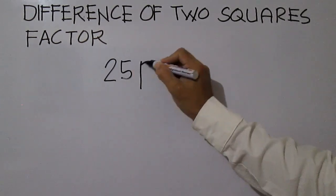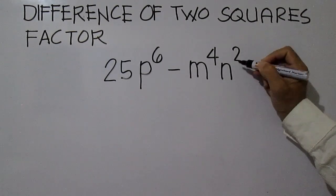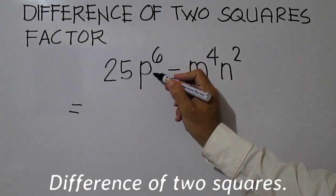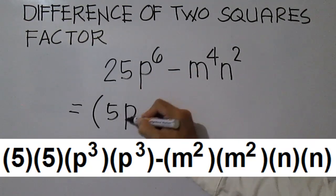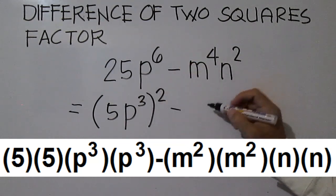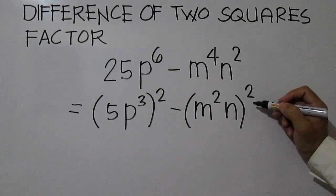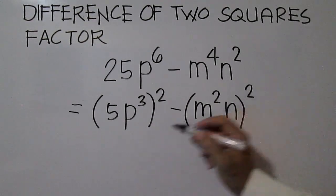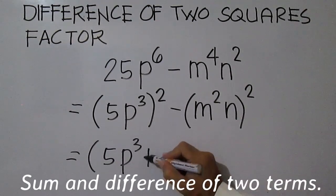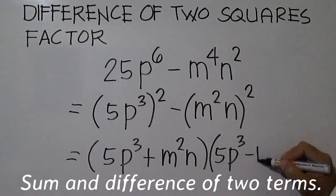Factor 25p to the power of 6 minus m to the power of 4, n squared. First, write in the form difference of two squares. 25p to the power of 6 can be written as 5p to the power of 3, quantity squared, since 5 times 5 is 25 and p cubed times p cubed is p to the power of 6. m to the power of 4, n squared can be written as m squared, n, quantity squared. This is difference of two squares. Copy the base of each term and write in the form sum and difference of two terms. The factors are 5p cubed plus m squared n, and 5p cubed minus m squared n.